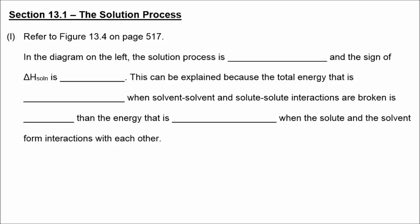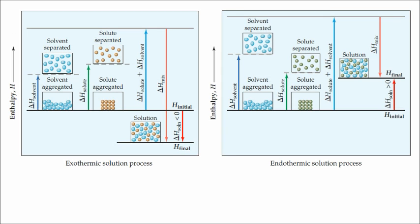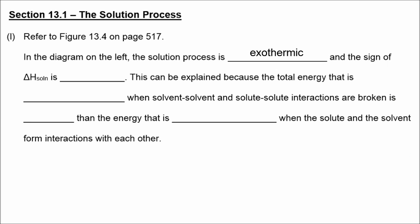For Part L, let's look at the figure on page 517. In the diagram on the left, we have an exothermic solution process. The solvent and the solute start at a certain enthalpy level, but the solution finishes at an enthalpy level that is lower than where it started. So the final difference leads to a delta H that is less than zero — a negative delta H is an exothermic process. The total energy absorbed when solvent-solvent and solute-solute interactions are broken is less than the energy released when the solute and the solvent form interactions with each other.